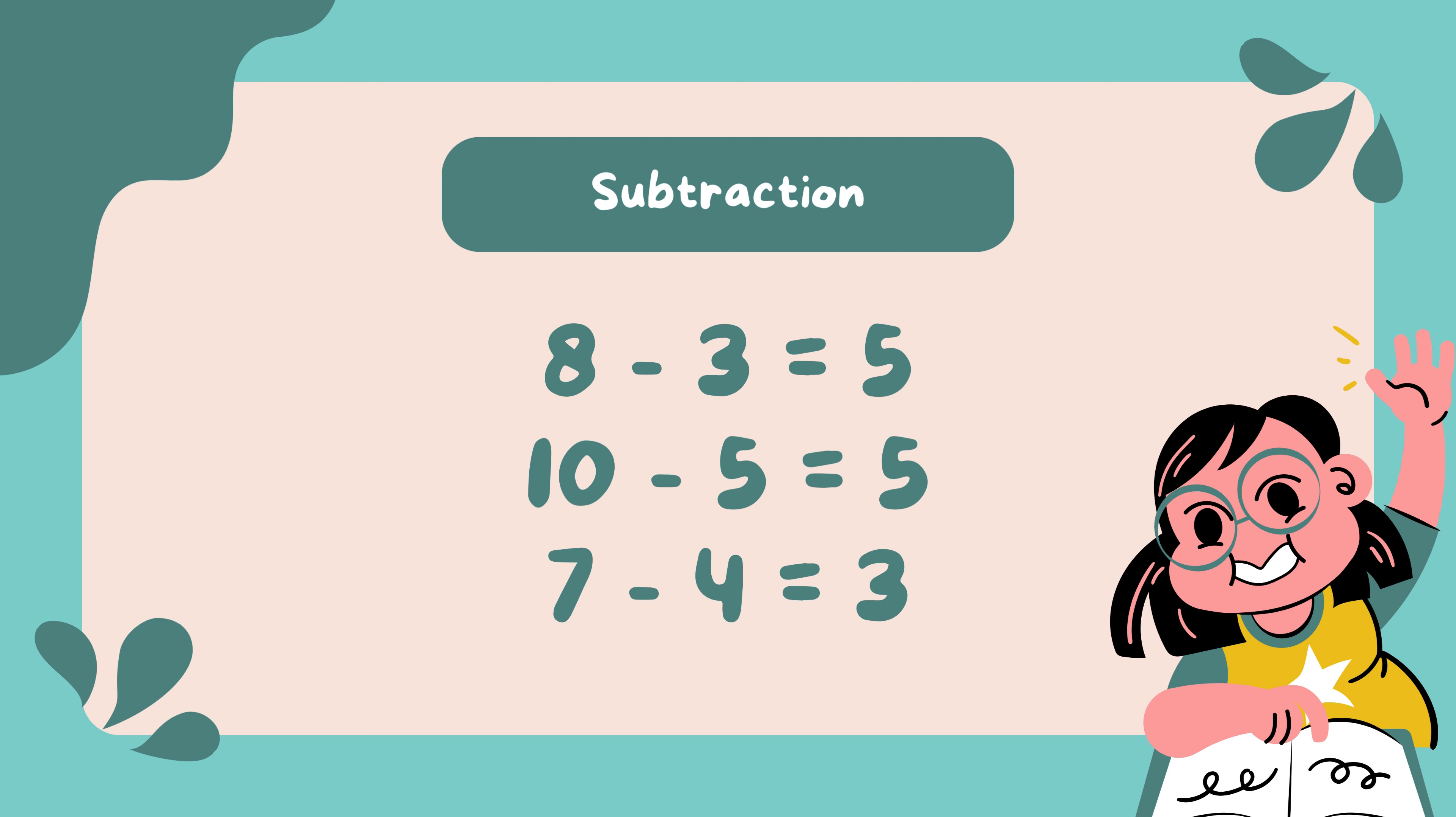Subtraction: 8 minus 3 is equal to 5. 10 minus 5 is equal to 5. 7 minus 4 is equal to 3.